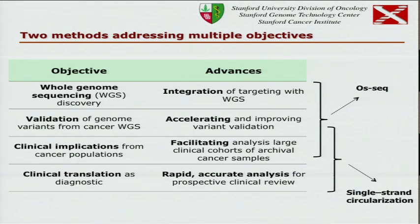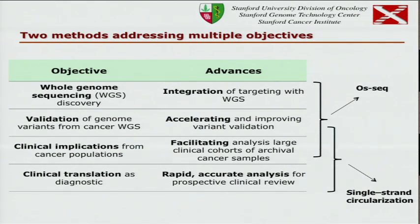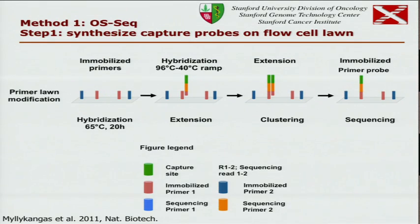The second method, single-strand circularization, is another targeting method, and it has the advantage of being applicable to DNA that is not in double-stranded form and may be partially degraded.